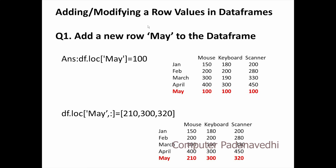We will create a row. First, add a new row — May — to the DataFrame. In January, February, March, April, May — we will create a row. df.loc['May'] is equal to 100.